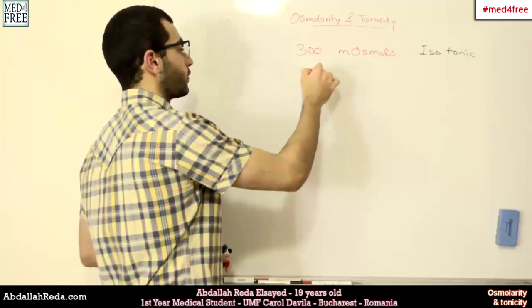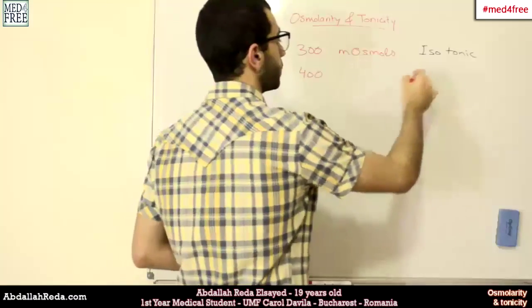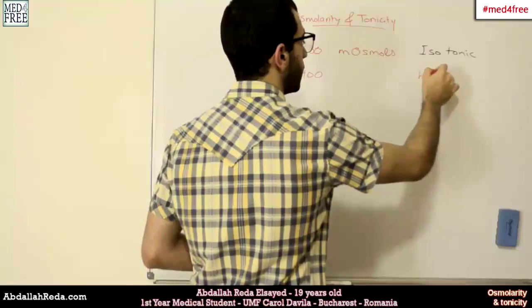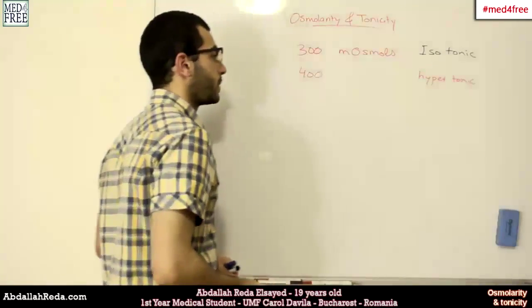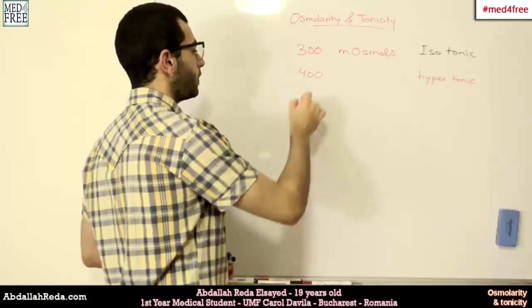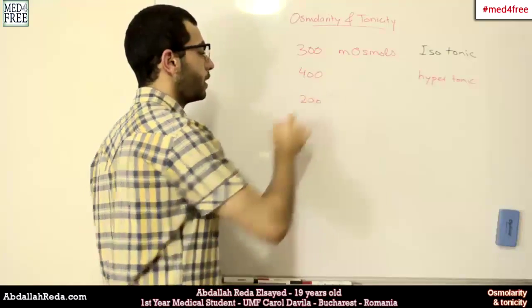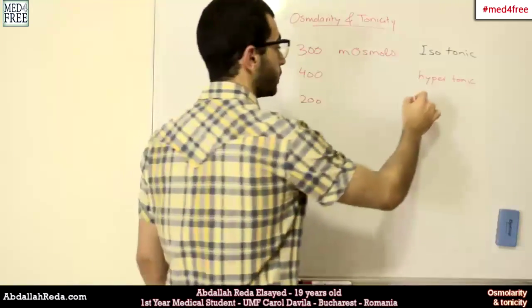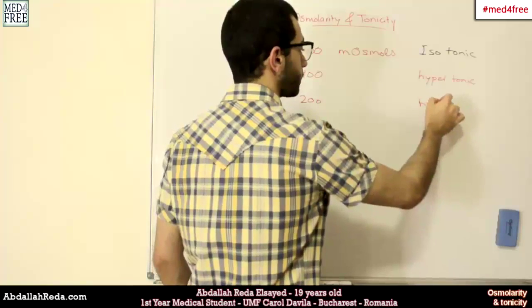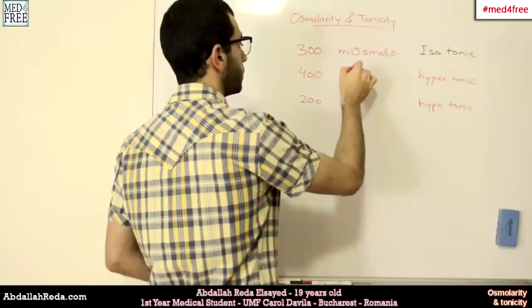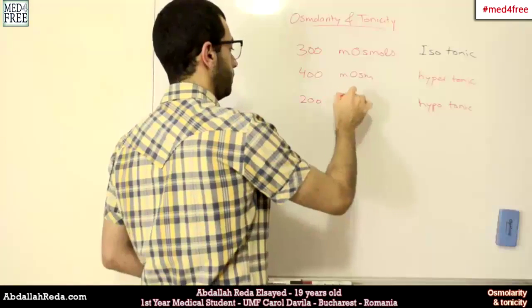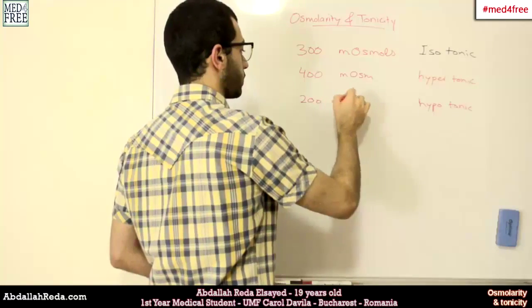If it becomes 400 for example, then this solution will be hypertonic. And if it's 200, this solution will be hypotonic. And of course, the unit is milliosmols.